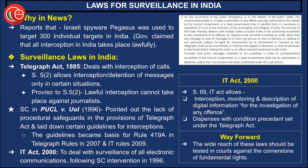The IT Act also dispenses with the condition precedent set under the Telegraph Act, and again it provides that lawful interception cannot take place against journalists. The article provides a way forward: the wide reach of these laws should be tested in courts against the cornerstone of fundamental rights. The right to information under Article 19(1)(a) is a fundamental right, and the right to privacy is also a fundamental right. All these need to be balanced, and the Supreme Court should play the role of ensuring there is no overreach of these laws, so that truth and justice ultimately triumph.